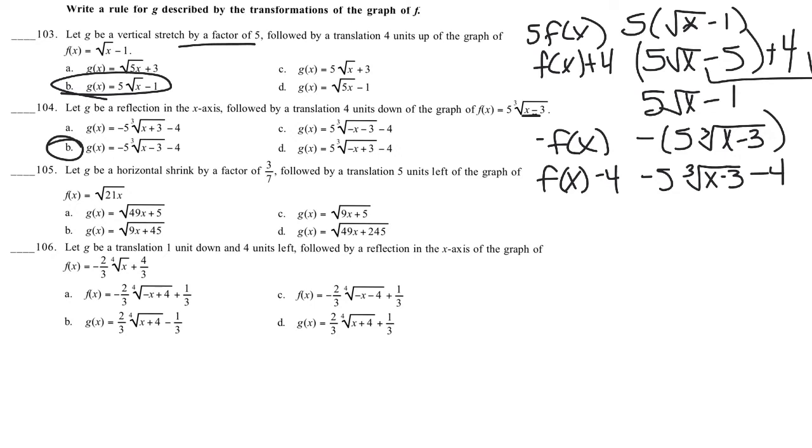Let G be a horizontal strength factor of 3/7. So that's f(7/3 x), followed by a translation 5 units left.